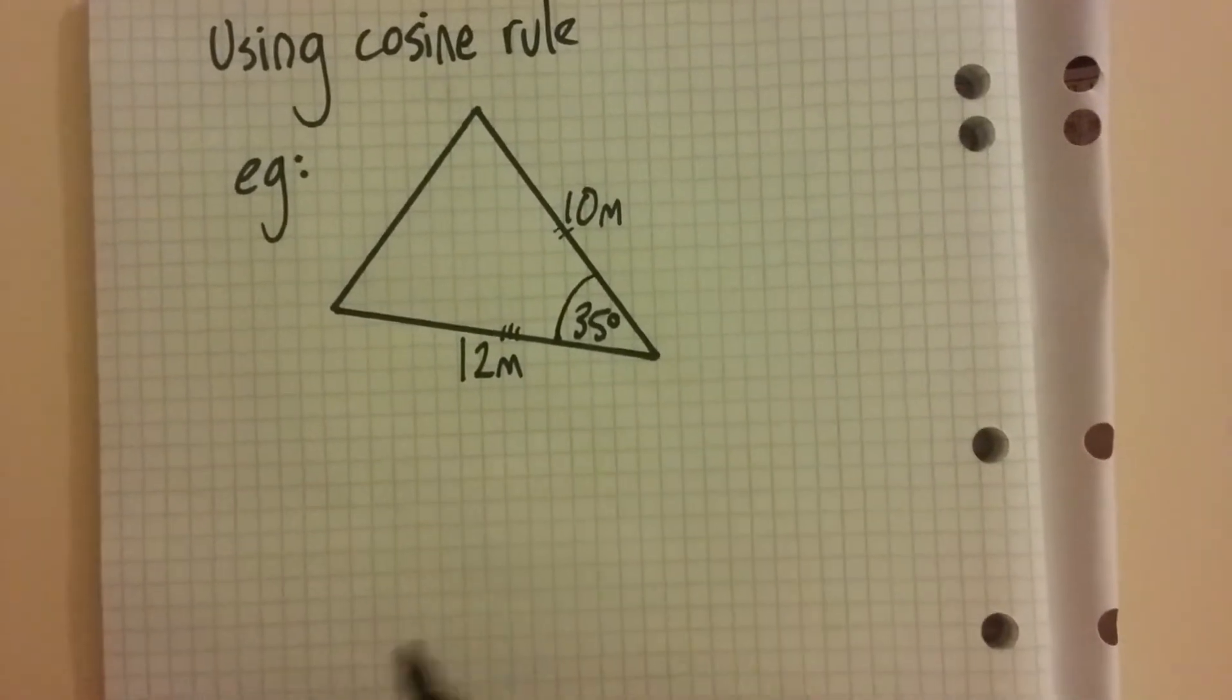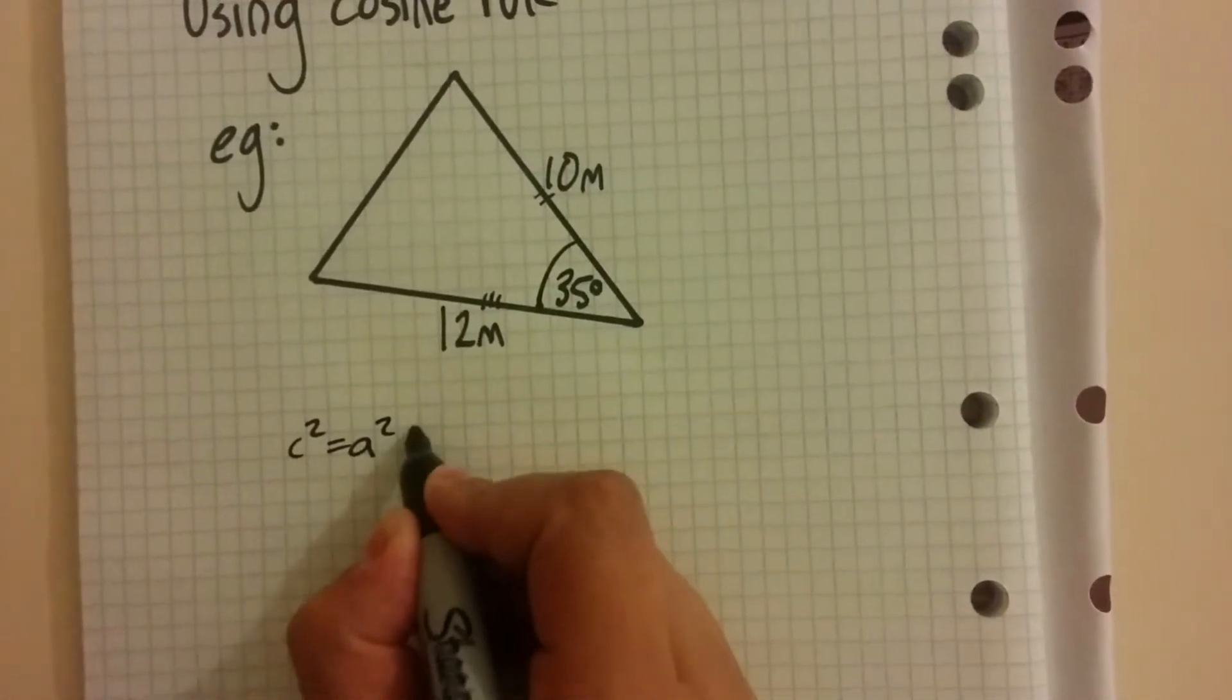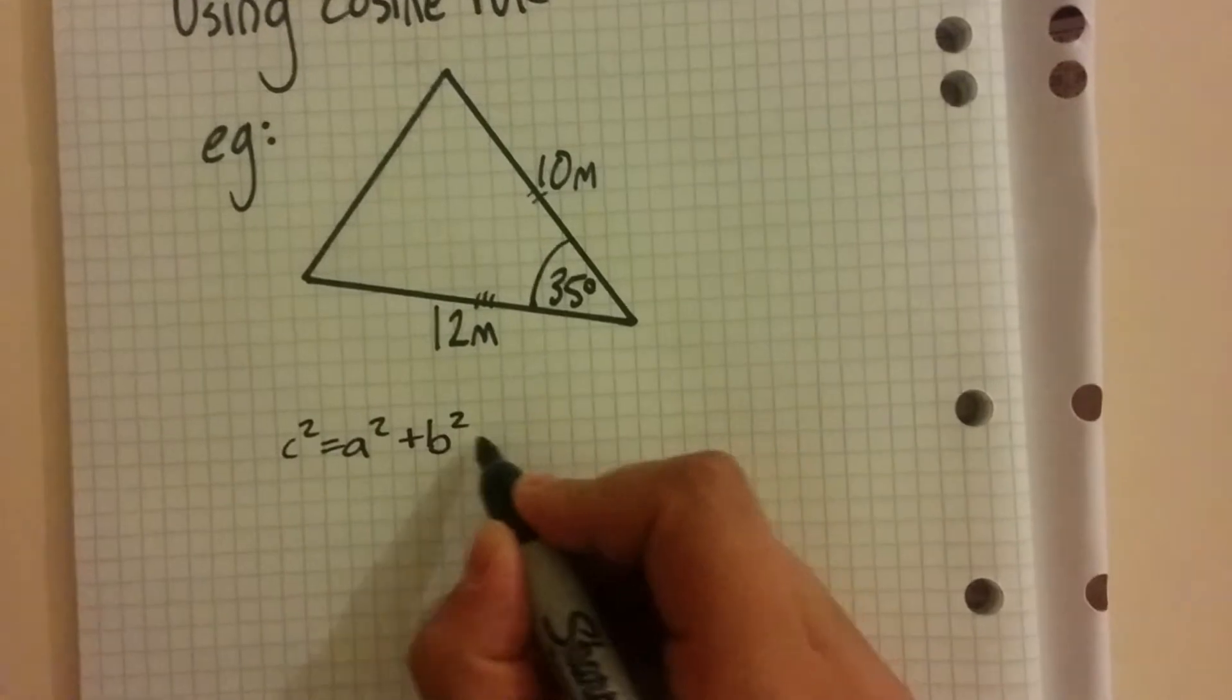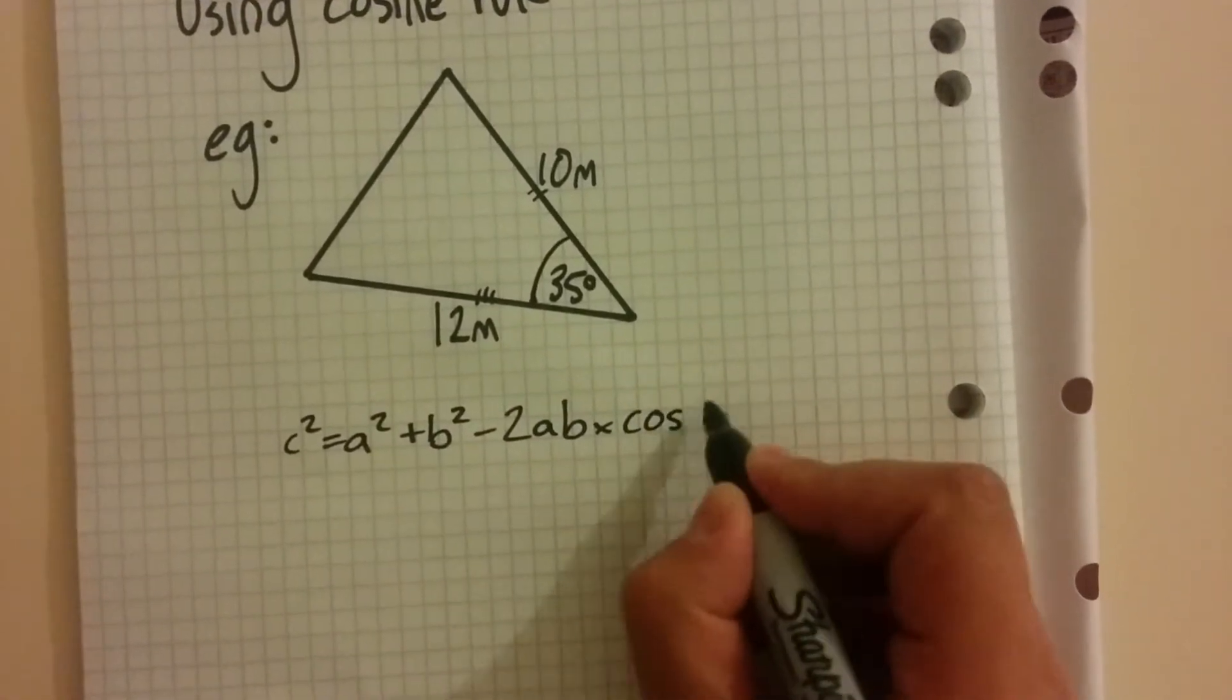Our cosine rule is c squared equals a squared plus b squared minus 2ab times cos C.